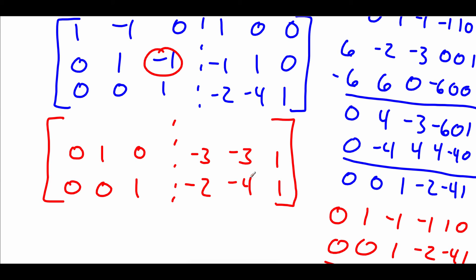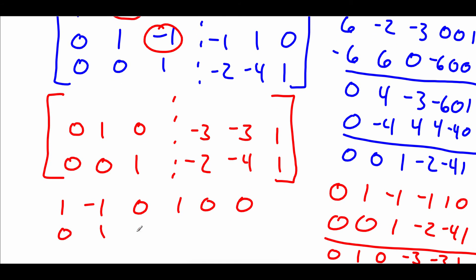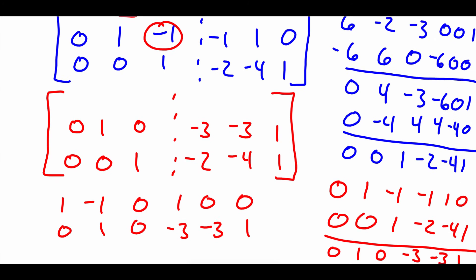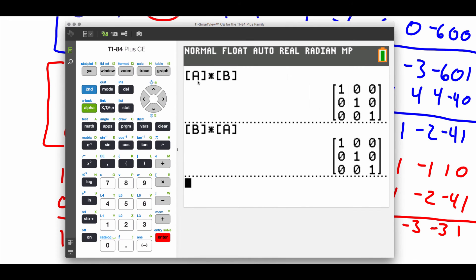Then we work on the top row to get rid of the negative 1 in the second column. Taking the top row — 1, negative 1, 0, 1, 0, 0 — and adding our new middle row 0, 1, 0, negative 3, negative 3, 1, which clears the second column without changing the first or third. Adding those together gives 1, 0, 0, negative 2, negative 3, 1, which fills in our top row. We confirm with the calculator: typing the original matrix as A and our new 3x3 matrix as B, both A times B and B times A give the 3x3 identity matrix. So yes, these are inverses of each other.